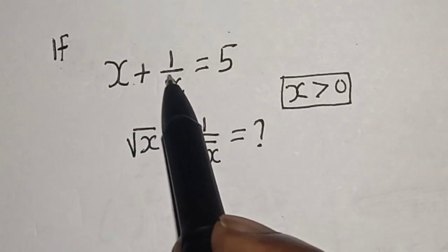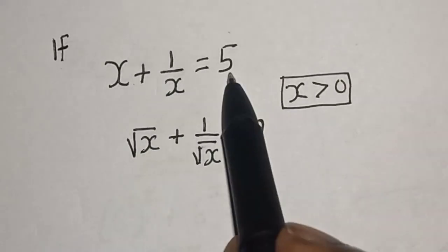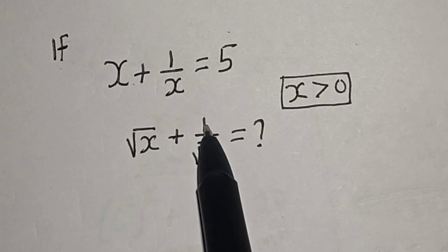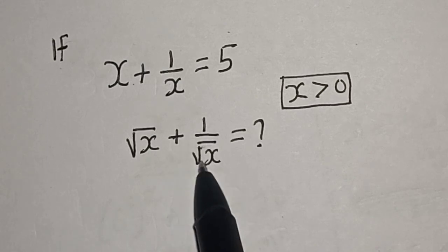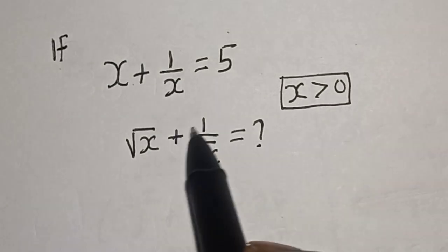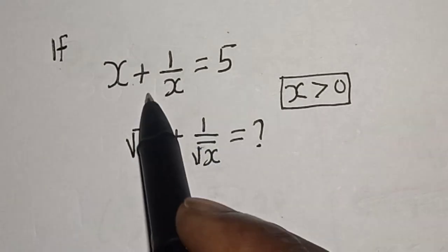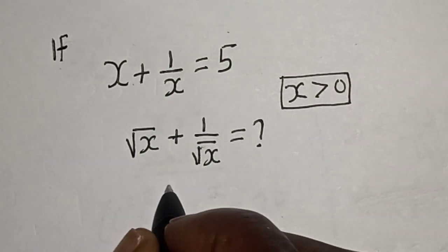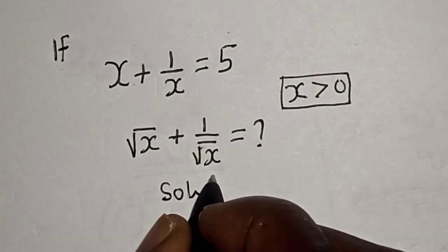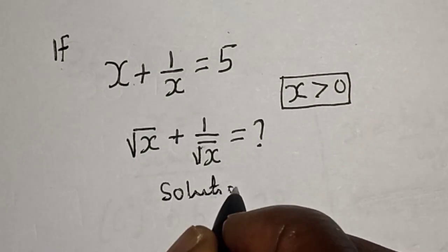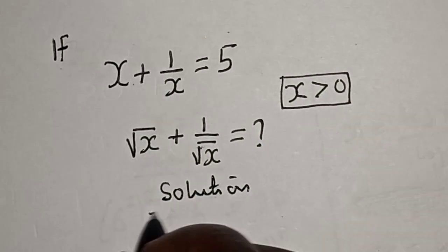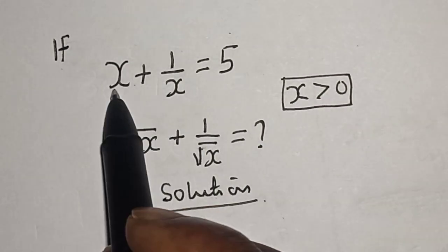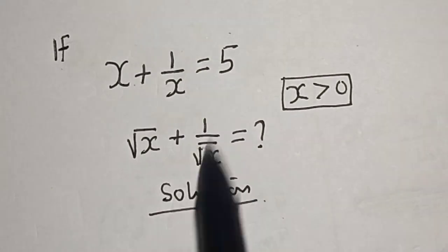If s plus 1 divided by s is equal to 5, what is the value of square root of s plus 1 divided by square root of s? Before we proceed, please don't forget to like, share, comment and subscribe. For the solution, the first thing we do is note that s plus 1 divided by s is equal to 5.